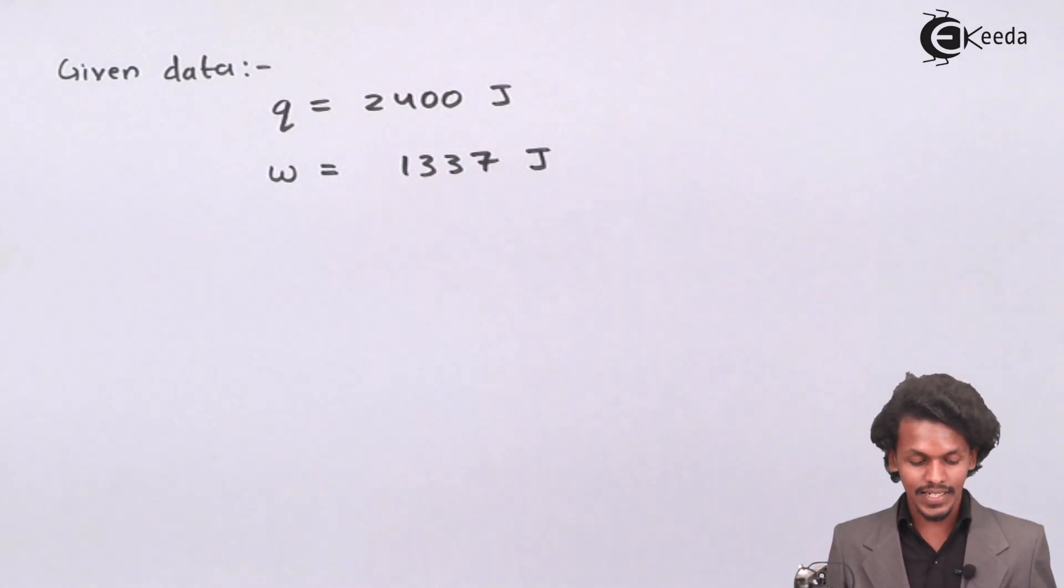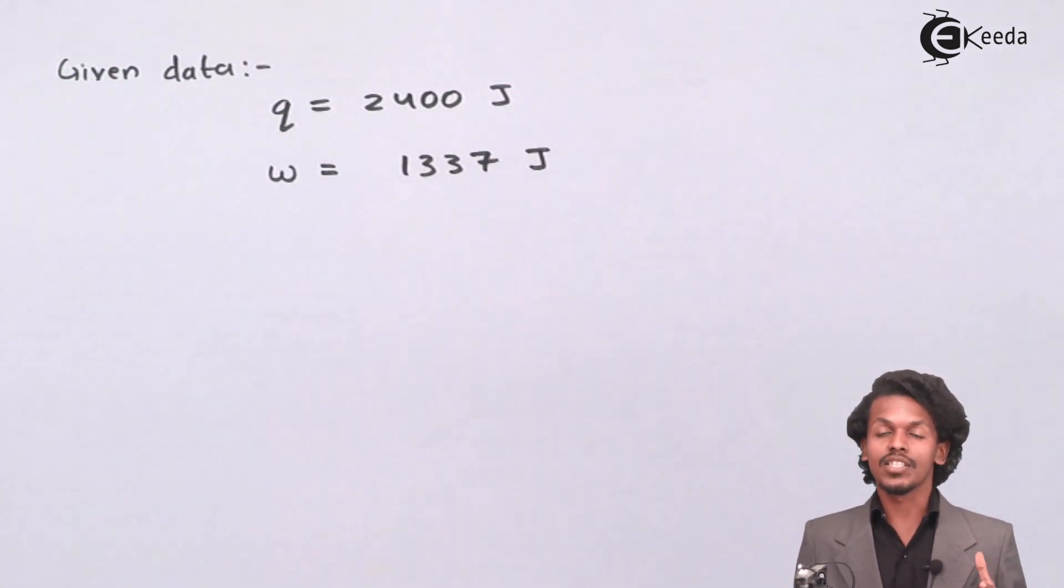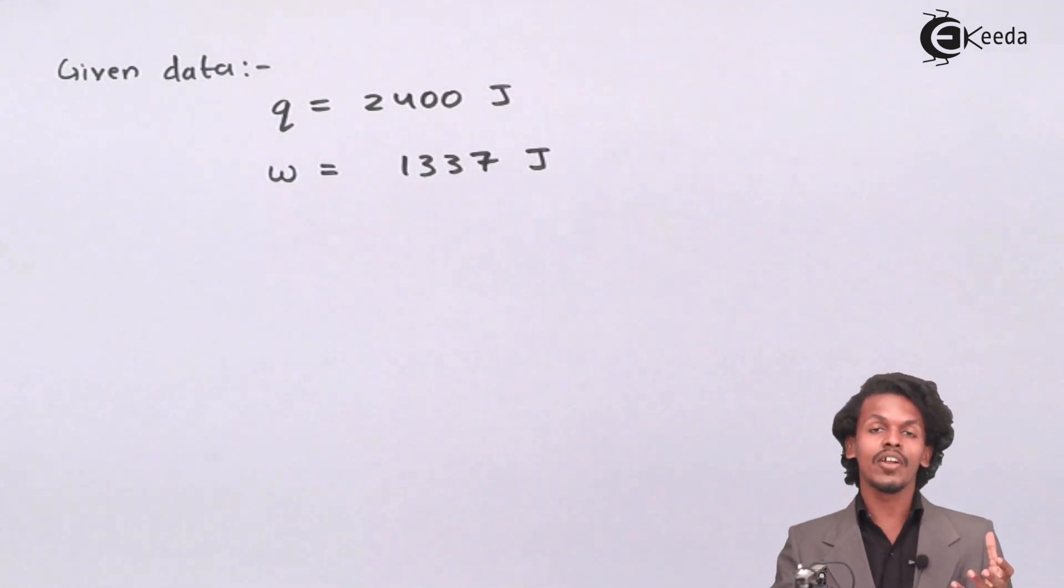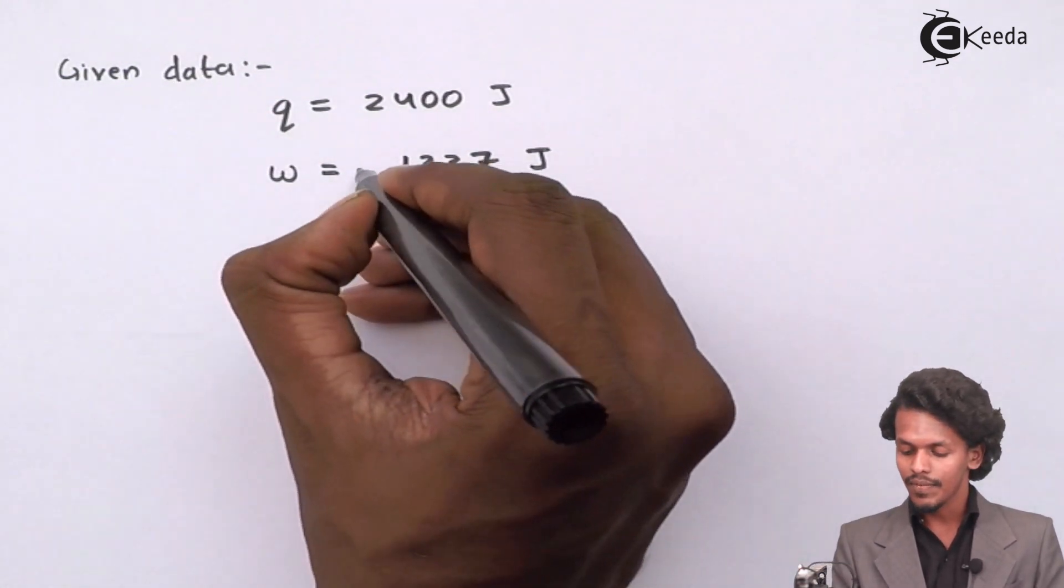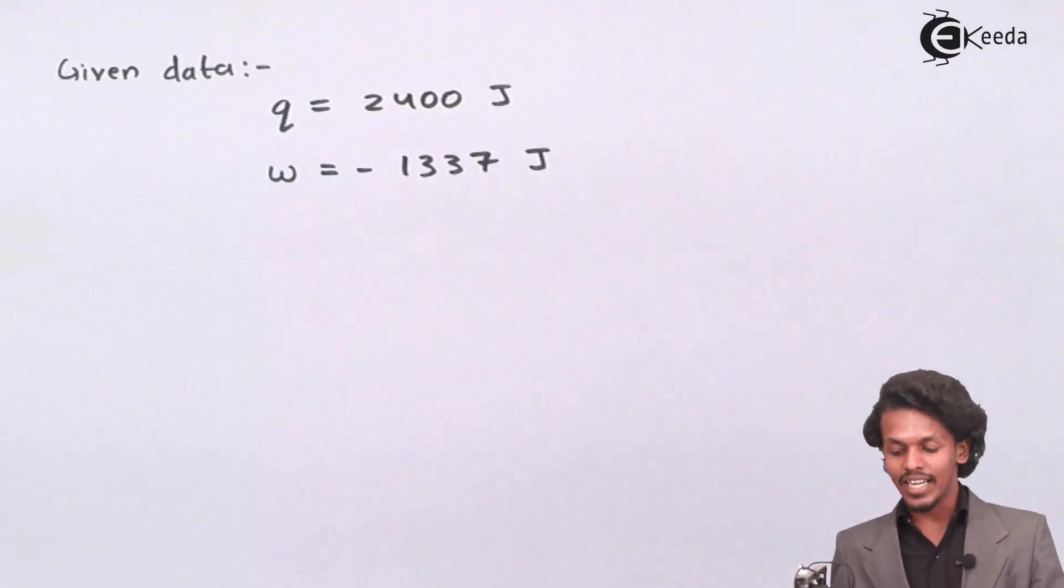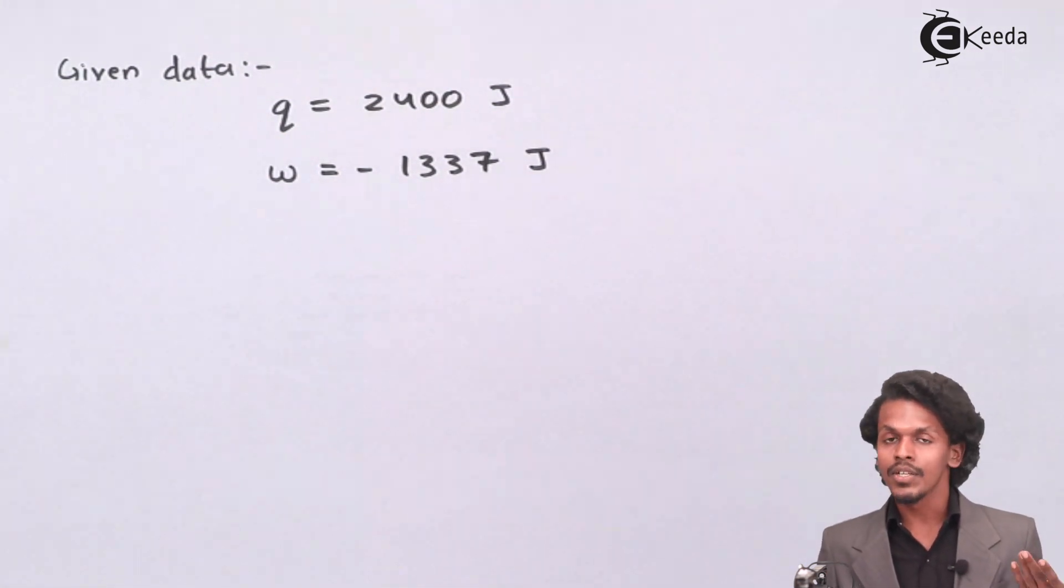But when work is done by the system on the surroundings, the work is always negative. Since the gas has expanded, and during expansion the system does work on the surroundings, the sign convention for that work is negative. Therefore, the work will have a value of minus 1337 joules.